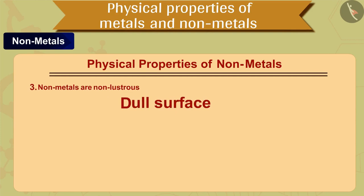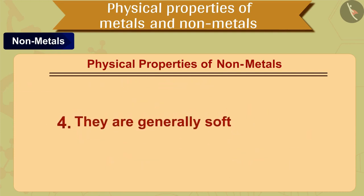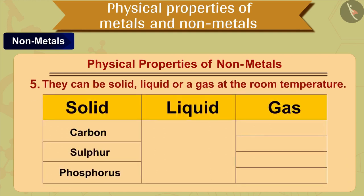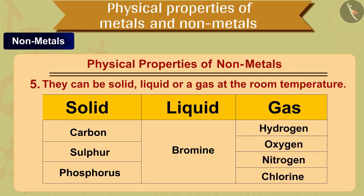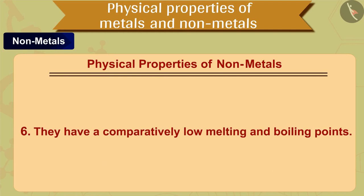It means that they have a dull surface. For example, sulfur and phosphorus. The fourth property of non-metals is that they are generally soft, except diamond. The fifth property of non-metals is that they can be solid, liquid or a gas at room temperature. For example, carbon, sulfur and phosphorus are solids, bromine is liquid, and hydrogen, oxygen, nitrogen and chlorine are gaseous at room temperature. The sixth property of non-metals is that they have comparatively low melting and boiling points, except diamond.